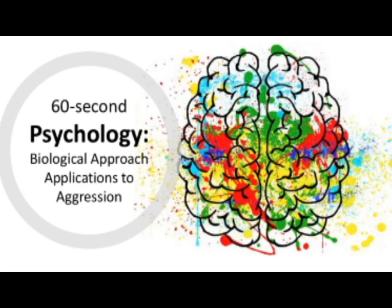This links quite closely with neurochemistry, as the level of neurotransmitters in these parts of the brain can also impact their function. For example, serotonin levels in the orbitofrontal cortex are involved in self-control. So an imbalance of serotonin can impact a person's ability to control their impulses, including aggression.